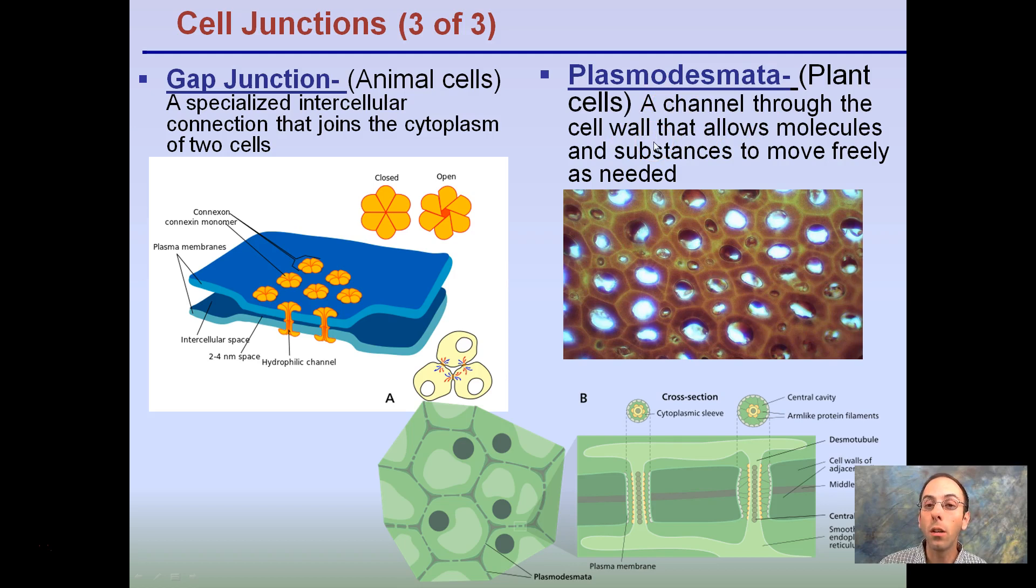Remember, plant cells have the cell wall that allows molecules and substances to move freely as needed. This is advantageous for the cells that reduces the energy when it's looking to move particular nutrients or could be waste products or signals from one cell to another. They look just like this. There are holes in the cell wall. These plasmadesmata are holes.